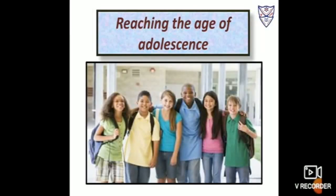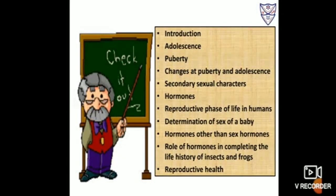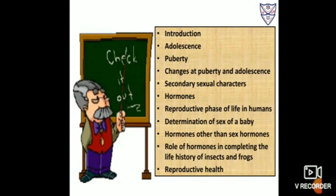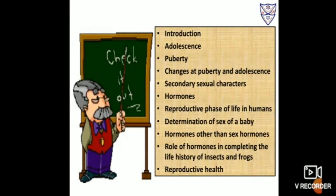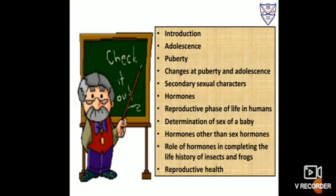Welcome students. Today we are going to start with Chapter 10, Reaching the Age of Adolescence. In this chapter, we are going to discuss about adolescence, puberty, changes at puberty and adolescence, secondary sexual characters, hormones, reproductive phase of life in humans, determination of sex of a baby, hormones other than sex hormones, role of hormones in completing the life history of insects and frogs, and reproductive health.